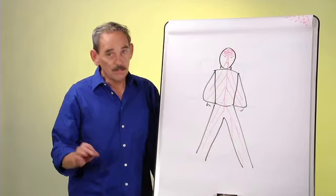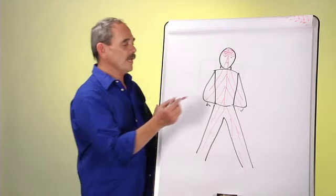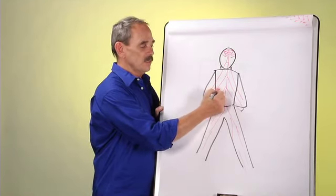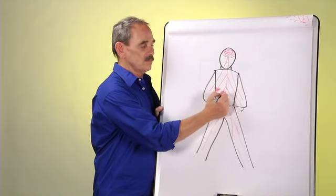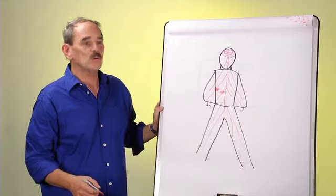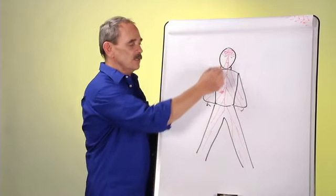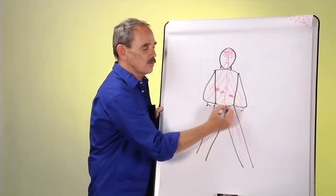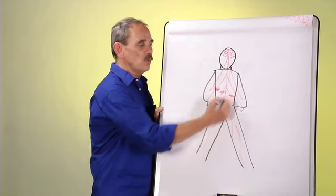When a person takes a drug, most drugs, what happens is it cuts off the communication in this central nervous system. That's one of the reasons that drugs will kill pain, it will relax you, because this nice smooth flow all the way through the body is actually stopped or cut off at some point.